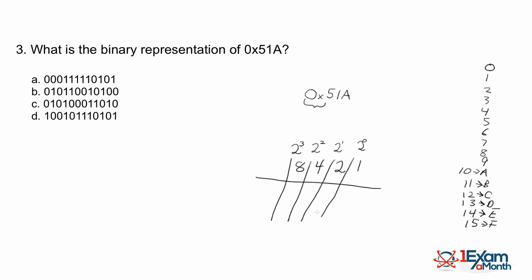Let's convert the digit 5. Will 8 go into 5? No — put a 0 there. Will 4 go into 5? Yes — put a 1, and the remainder is 1 (5 minus 4). Will 2 go into 1? No — put a 0. Will 1 go into 1? Yes — put a 1. So 5 in hex converts to 0101 in binary. For the digit 1, it's simple: 0001 in binary.